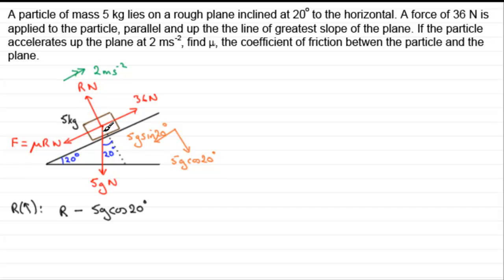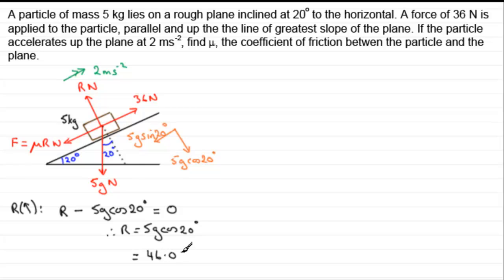That resultant is zero because the particle is neither moving off the plane nor collapsing into it — relative to the plane in that direction it's not moving. So rearranging: R equals 5g cos 20 degrees. Working that out on the calculator gives R equals 46.0449 newtons. We won't round that up because we'll use this value later in the problem.